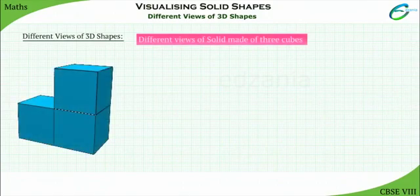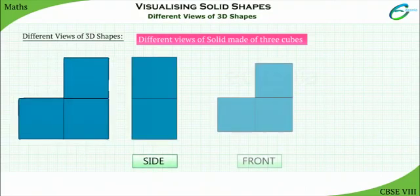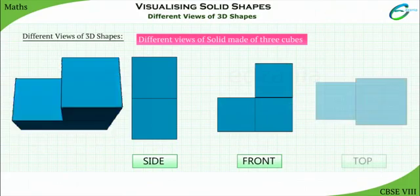Here it is, a solid made of 3 cubes. Can you guess the different views of this solid? Side view of the solid, front view of the solid, top view of the solid.